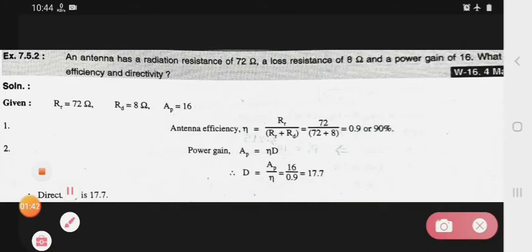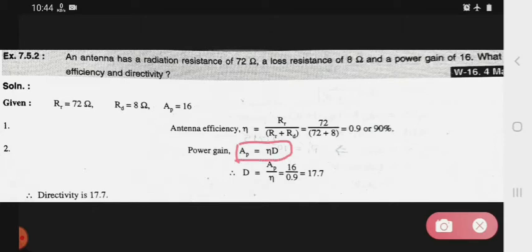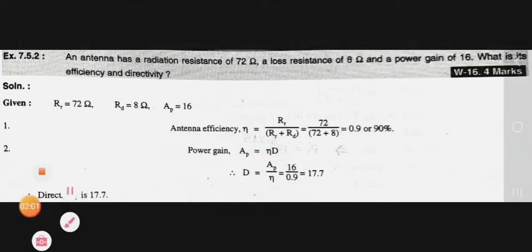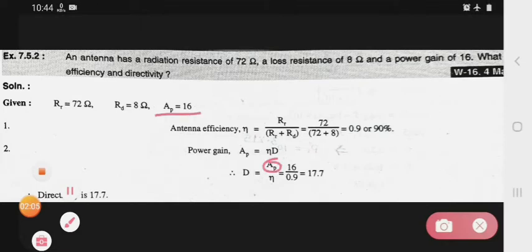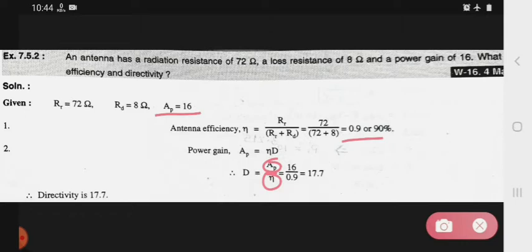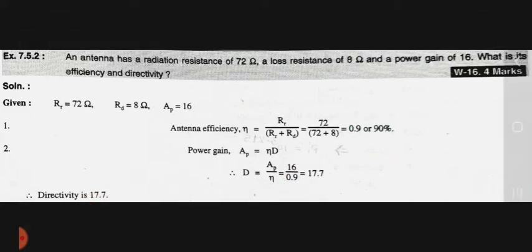Then next we have to find out the directivity. The standard formula for the power gain is Ap equals N into D, where Ap is the power gain, N is the efficiency and D is the directivity. We know that the power gain is 16 and efficiency is 0.9 already we find out. So from that values we find out the directivity is 17.7. In this way we solve this problem.